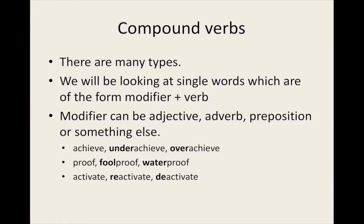'Underachieved' and 'overachieved' are formed by adding the prepositions 'under' and 'over' to the verb 'achieve'. 'Foolproof' and 'waterproof', on the other hand, are compound verbs formed by using a noun as the modifier — they are formed by adding the nouns 'fool' and 'water' respectively to the verb 'proof'. The prefixes 're' and 'de' are used to modify the verb 'activate': 're' implies doing something again or a repeated action, and 'de' implies reversing a process. Hence we get 'reactivate', which means to activate again, and 'deactivate', which means to reverse the activation of something.